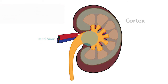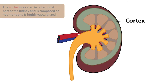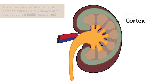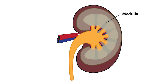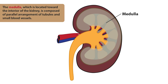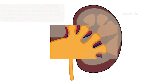The other important parts of the kidney are the cortex and medulla. The cortex is located in the outermost part of the kidney and is composed of nephrons; it is highly vascularized. The medulla is located towards the interior of the kidney and is composed of parallel arrangements of tubules and small blood vessels.